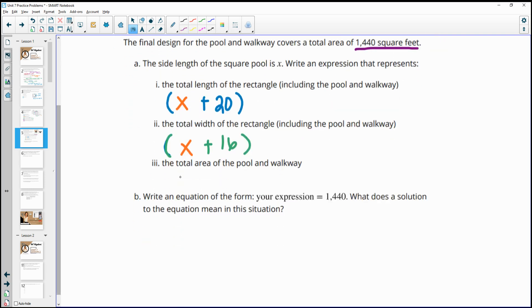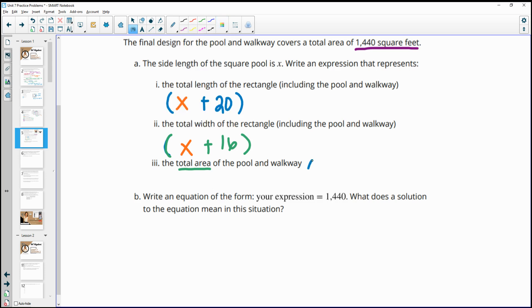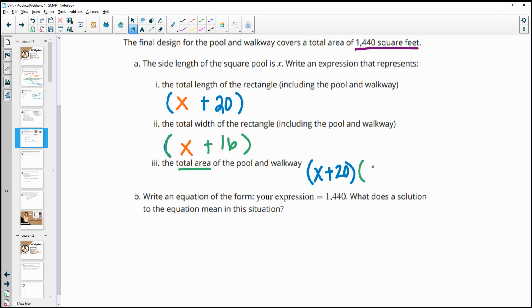So then it wants us to give an expression of the total area of the pool. And remember, for the area, you're going to multiply the length and the width together. And so we're going to be multiplying the X plus 20 expression times the X plus 16 expression.